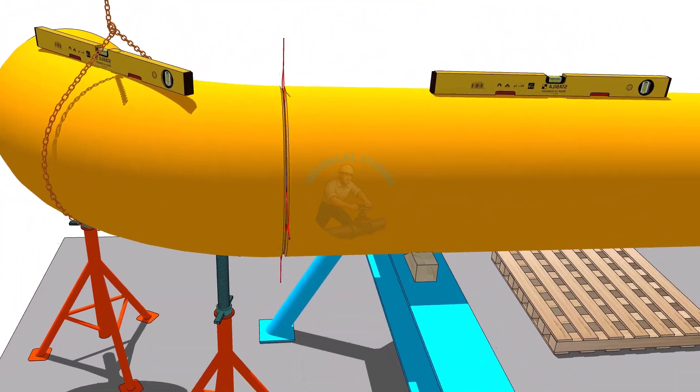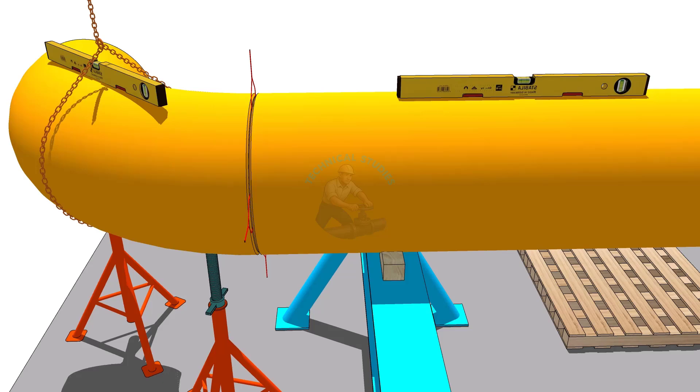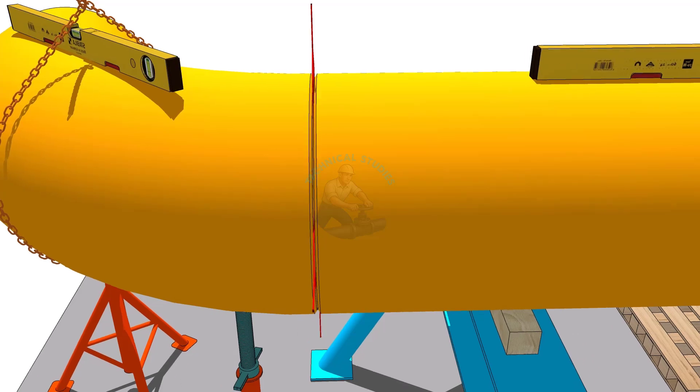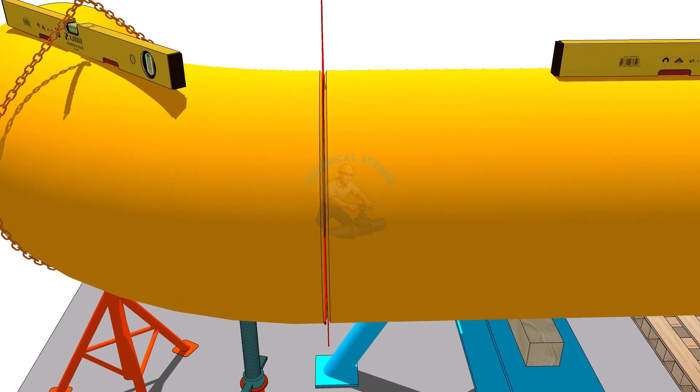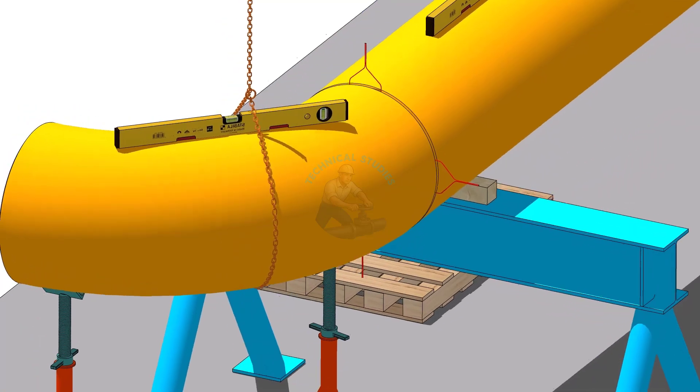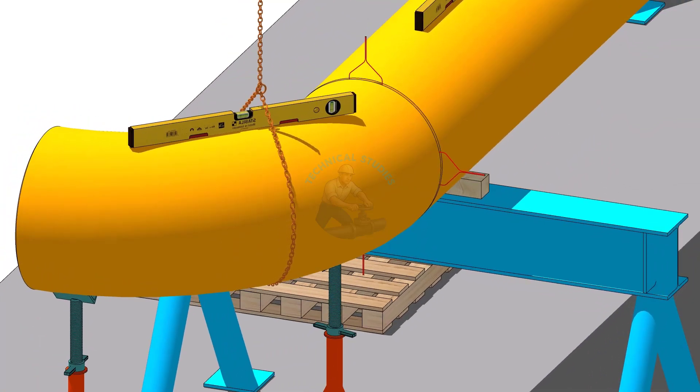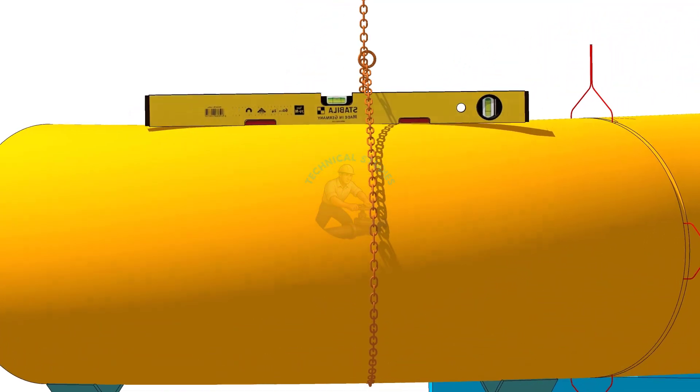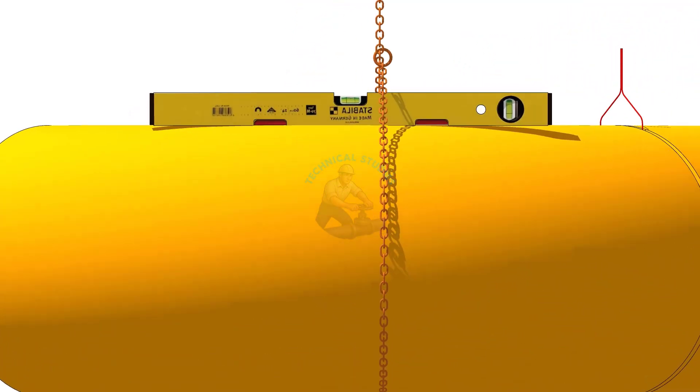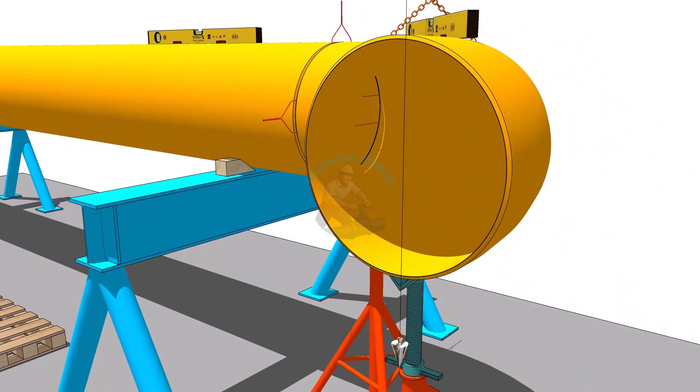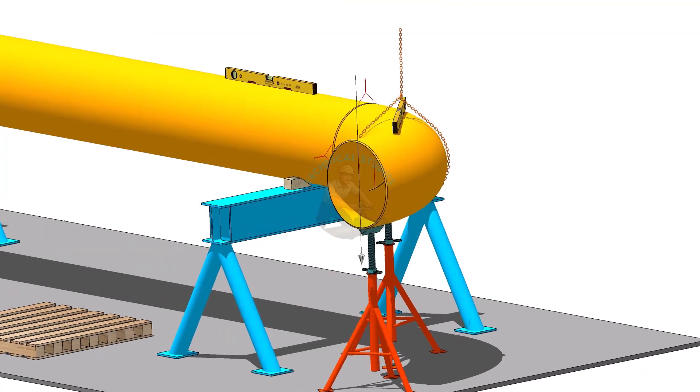Insert the gap rod into the joint. Correct the level of the elbow as shown. You can use either a spirit level or a plumb to check the level of the elbow face.